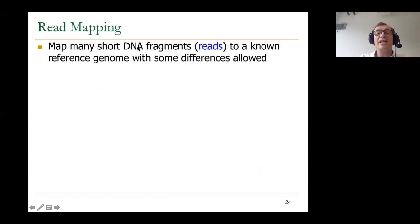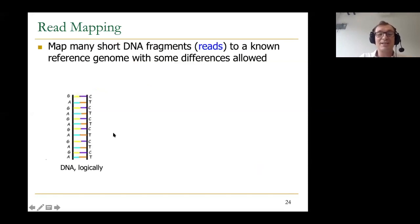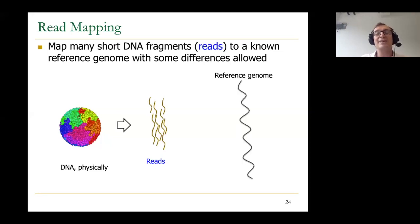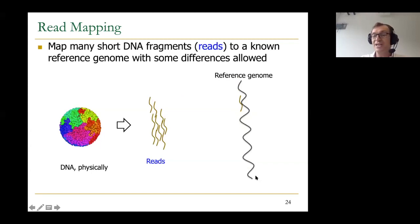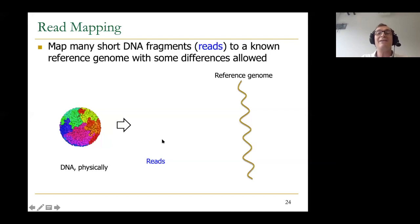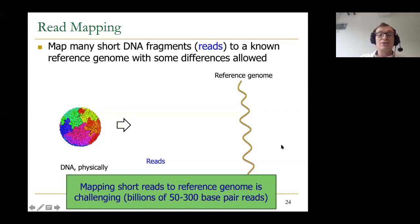DNA logically looks like a double helix — a double-sided strand — and physically it gets chopped into reads by a sequencing machine. Reads are then mapped to the reference genome with some differences allowed through the readmapping process. In the case of humans, you have billions of 50 to 300 base pair reads to map against a 3.2 billion base pair reference genome. This leads to the need for read alignment and verification — taking every read and comparing it to every possible location in the reference genome.